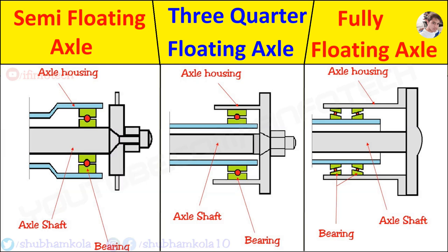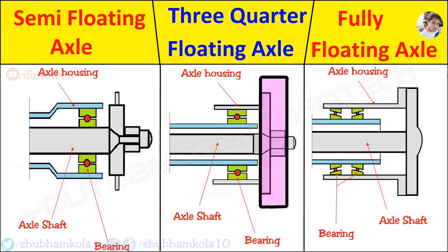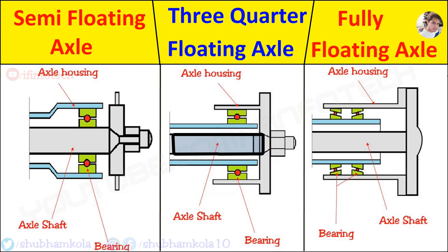Next is the three quarter floating axle. A single bearing is installed between the axle housing and wheel hub. The wheel is fitted directly to the shaft, so the load of the vehicle is transferred to the axle casing, and only side thrust and driving torque are taken by the axle shaft. The axle is keyed rigidly to the hub, providing a direct connection and maintaining wheel alignment.